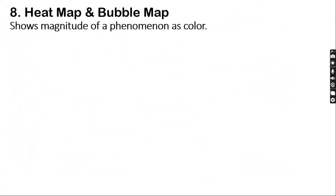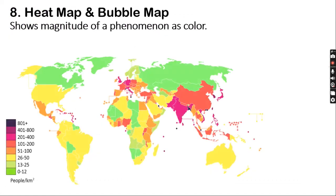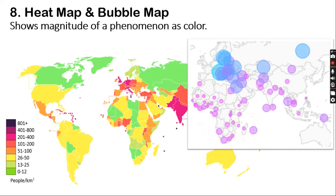Heat maps and bubble maps. For geographical data, we can either use a heat map or a bubble map. In the heat map, as shown on the left, we can show the data in terms of different colors. And in the bubble map, as we can see on the right, the intensity or quantity of data can be shown with the size or the color of the bubble.